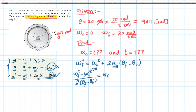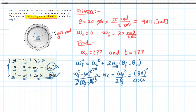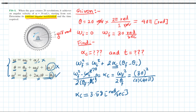Since the initial angular velocity and initial position are both zero, this simplifies to α_c = ω_final² / (2 × θ_final). Substituting values: α_c = 30² / (2 × 40π) = 900 / (80π). The constant angular acceleration equals 3.58 radians per second squared.